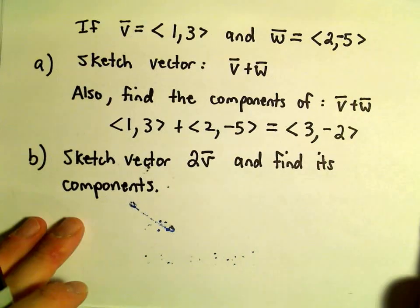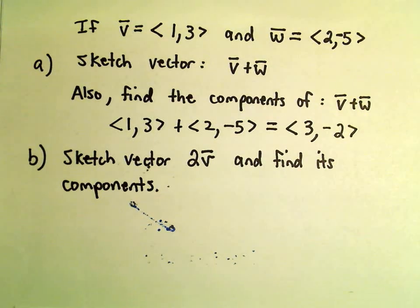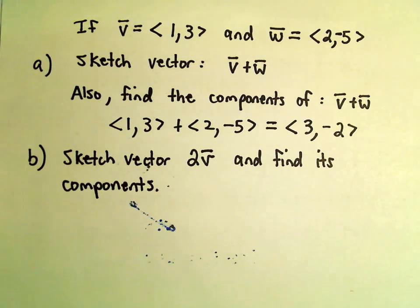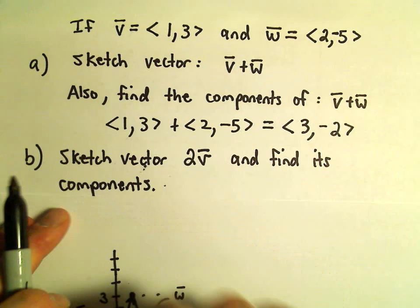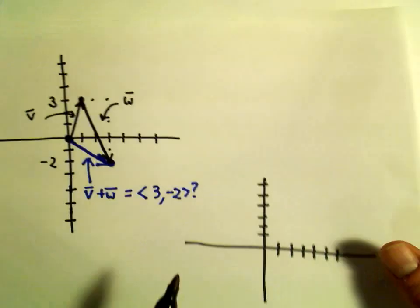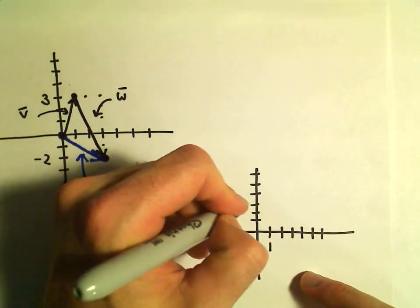So let's do one more here, got a little runoff. We're going to sketch vector 2v and also find its components. So vector v, again, we said that had components 1 comma 3, so I'll sketch it down here, 1 comma 3.